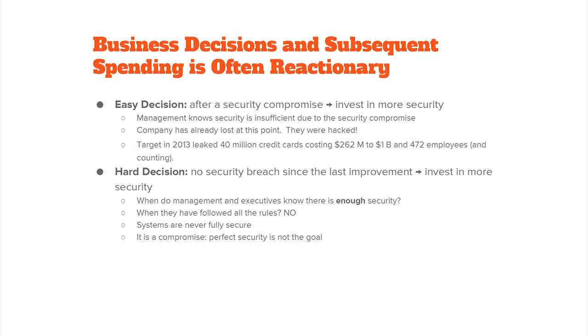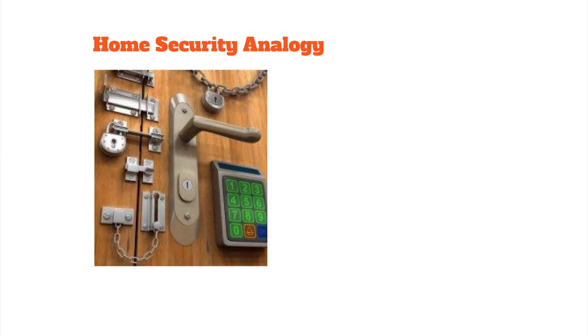Systems are never fully secure — it's always a compromise. Perfect security is not the goal. If you had to make a perfectly secure system, it really wouldn't exist — it'd be disconnected, put in a closet somewhere, locked with a guard out front, and nobody would use it. So when do you know you have enough security? You look at this door and ask: do you have enough locks? It's probably overkill given the door's made of wood, not steel.